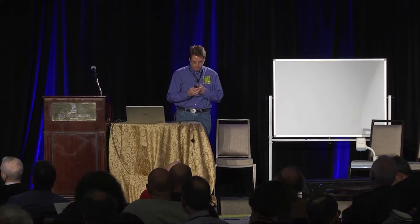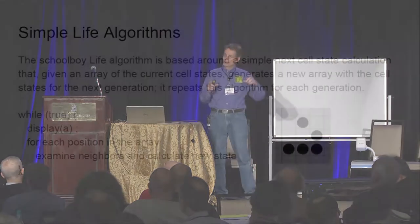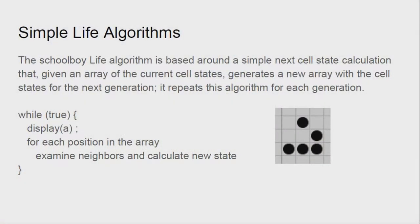The simple schoolboy life algorithm simply iterates over a grid going to every single cell, calculating the next transition for that cell. So if I've got a 1,000 by 1,000 universe and I advance it 1,000 generations in time, it's going to cost me more than a billion operations. That's slow and painful.